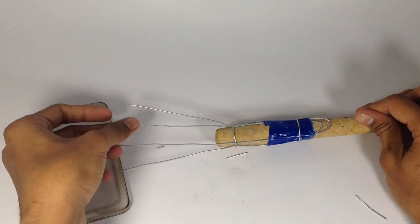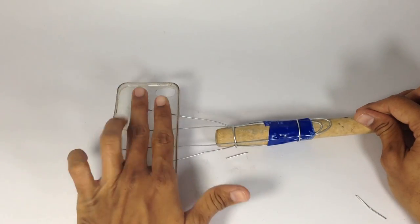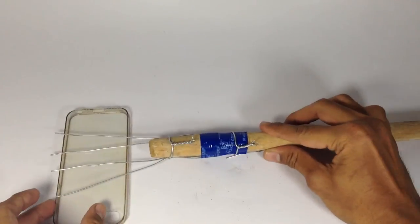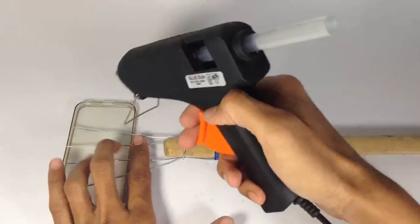Now fix the mobile cover on the open side of the wrapping wire and stick them with a glue gun so it can be steady in position.